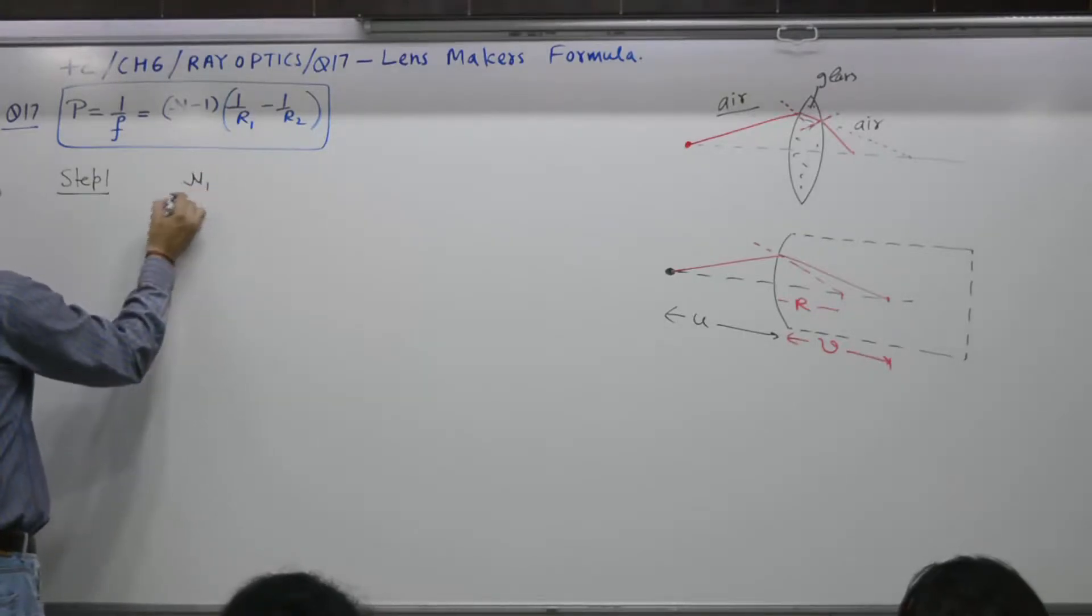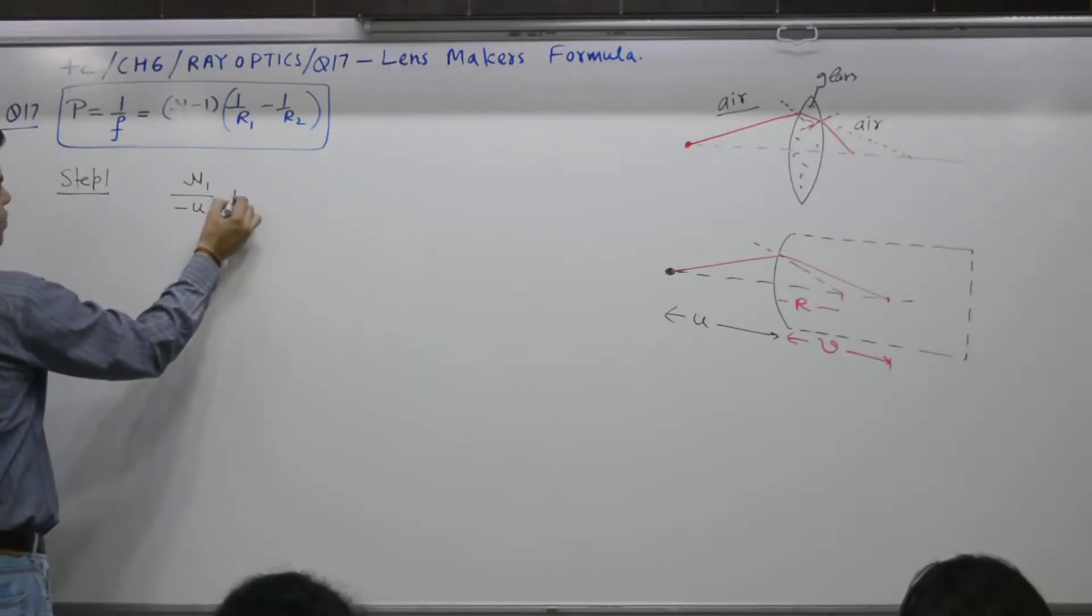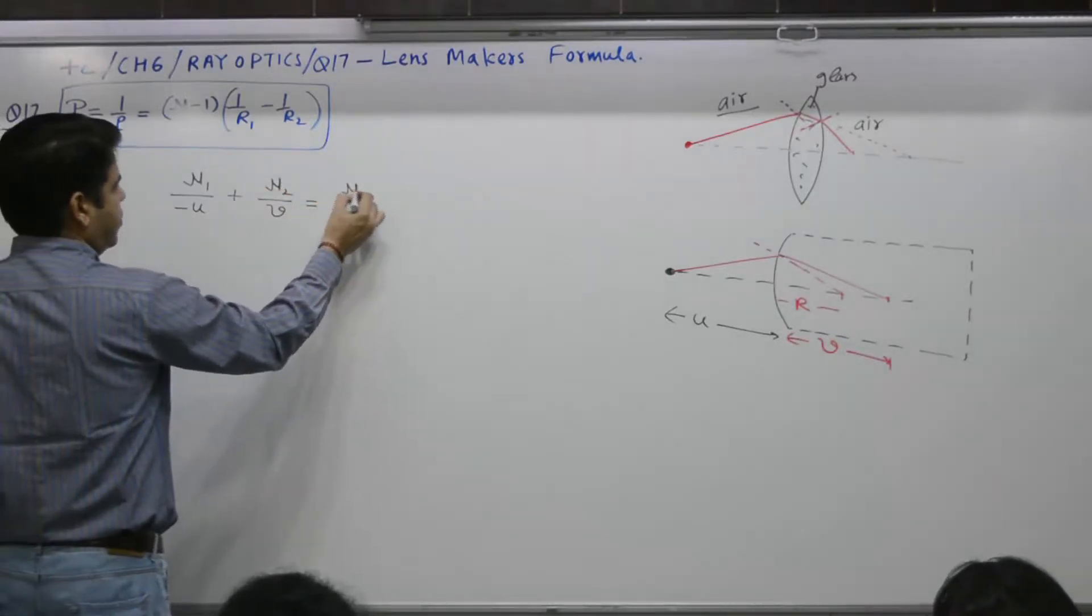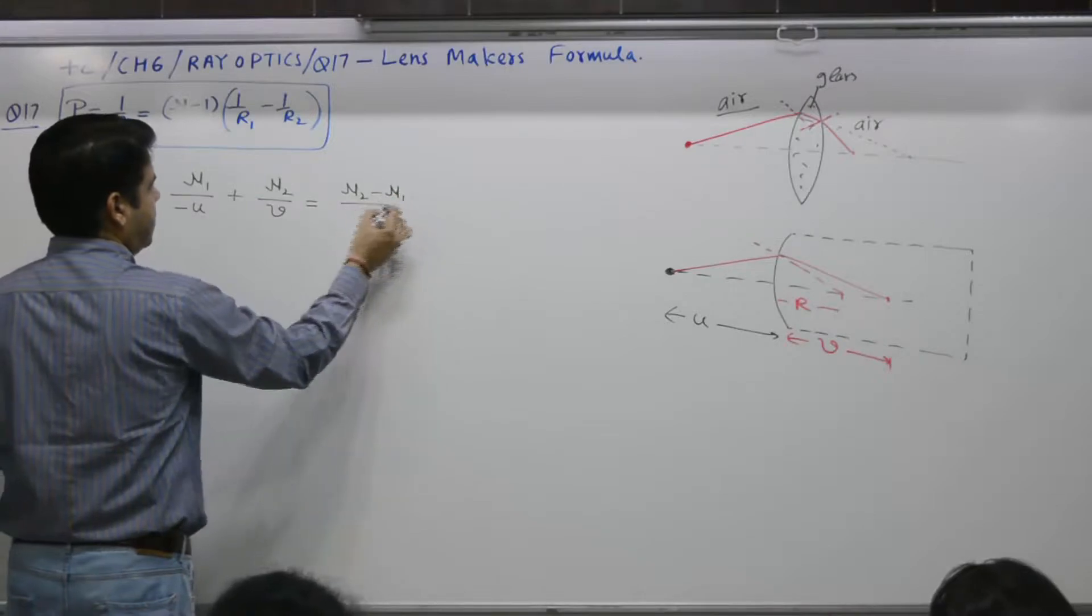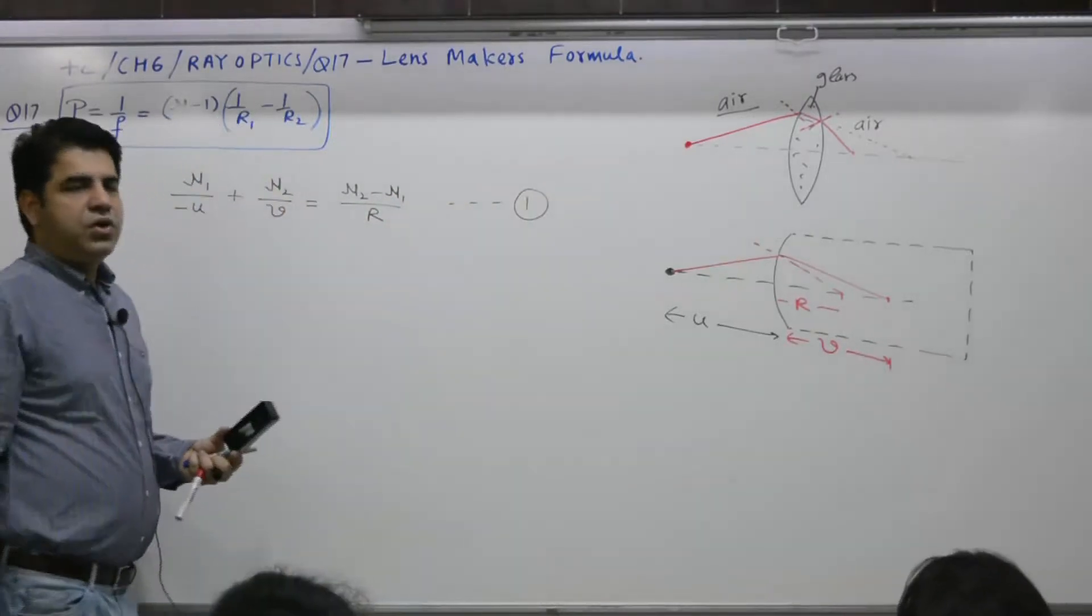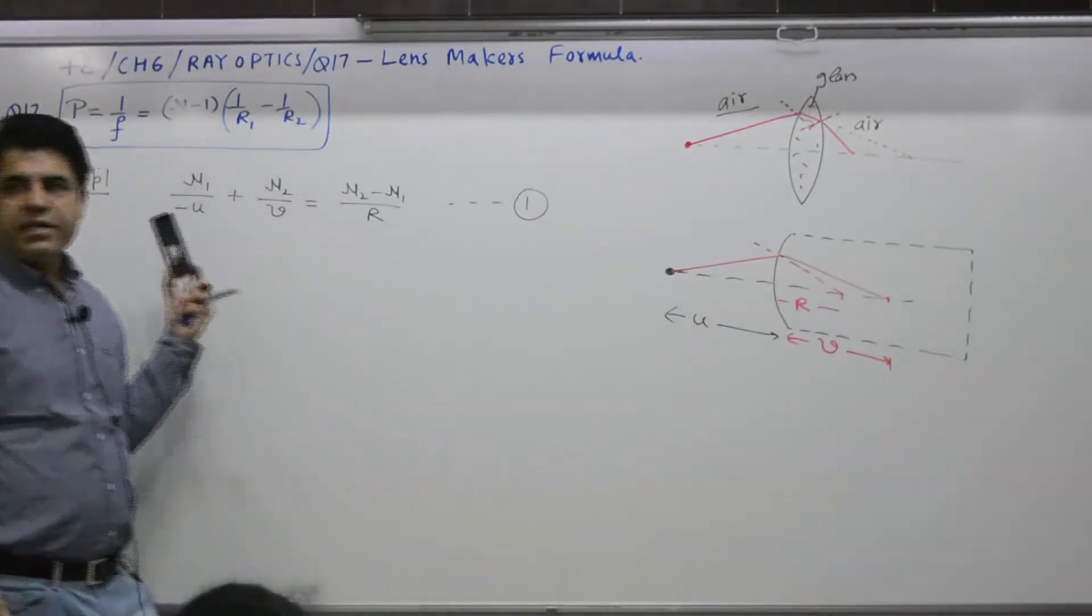NU1 by minus U, plus V is equal to NU2 minus NU1 by R. This is equation number 1, completed. Draw this diagram, write this two units.